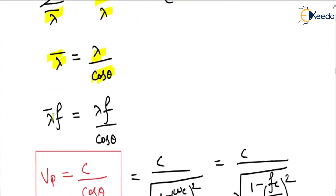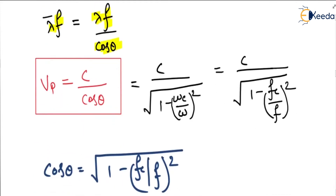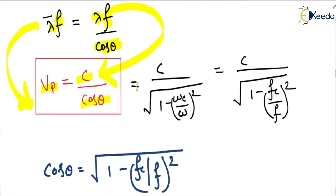Multiplying λ̄ by frequency f: λ̄f equals λf divided by cos θ. Here λ̄f denotes vp, the phase velocity along the guide axis, and λf equals c. So vp equals c divided by cos θ, which equals c divided by the square root of 1 minus (ωc/ω)², or c divided by the square root of 1 minus (fc/f)².